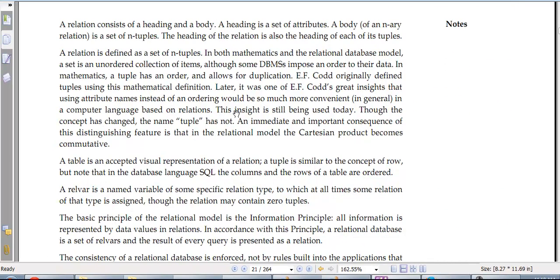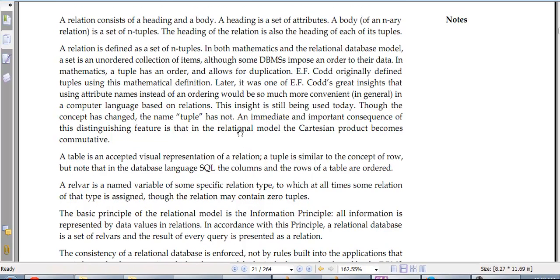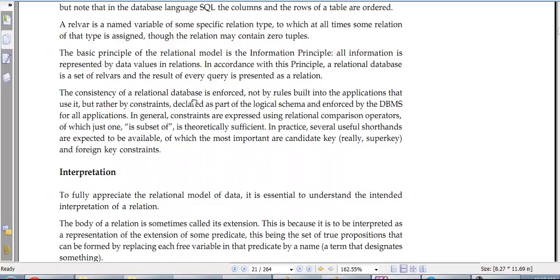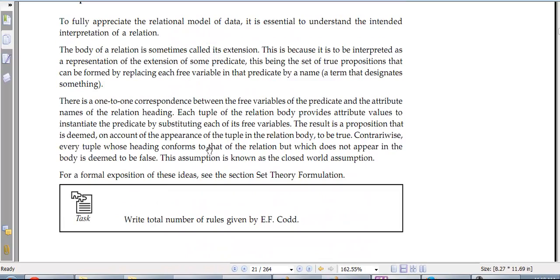The relational model consists of a head and a body. A head is attributes, a body is an n-ary of n tuples. The whole idea here is to make sure that we actually use the data in a more systematic way.